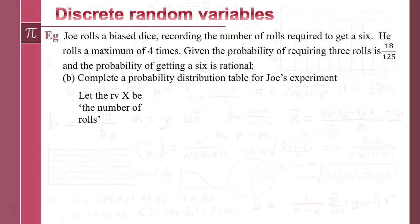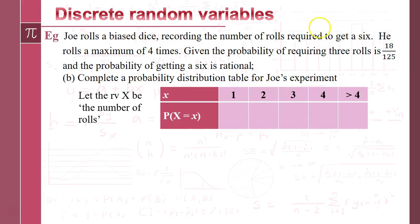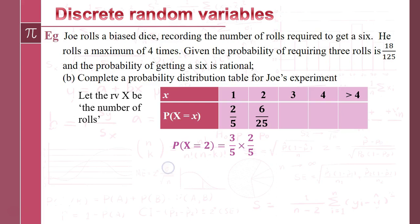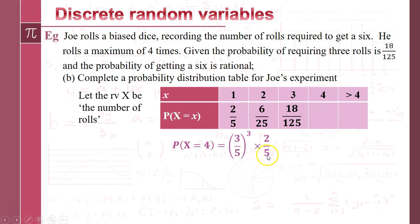Let's complete the table. Our random variable is the number of rolls acquired, with a maximum of four. The probability of getting a 6 on his first roll is 2/5. The probability that X equals 2 — failing first then getting a 6 — is 3/5 times 2/5, which is 6/25. The probability of requiring 3 rolls we already had: 18/125. The probability of requiring 4 rolls — three failures then a success — is (3/5)³ times 2/5.